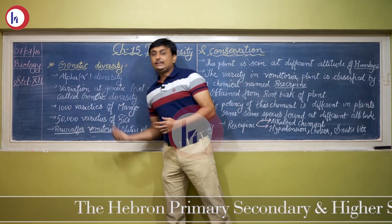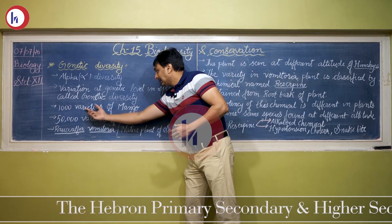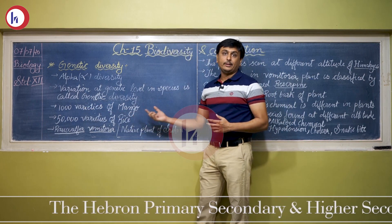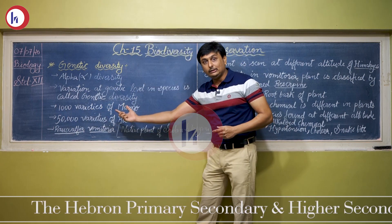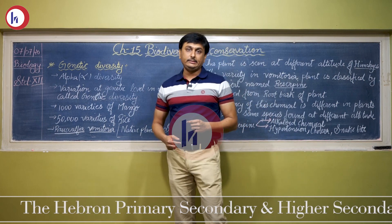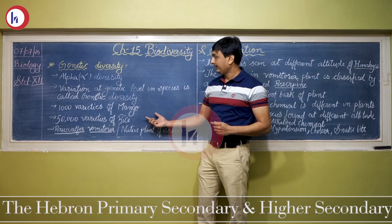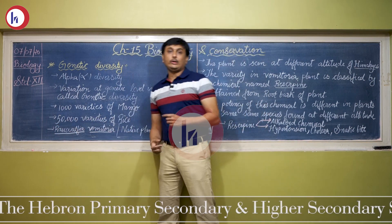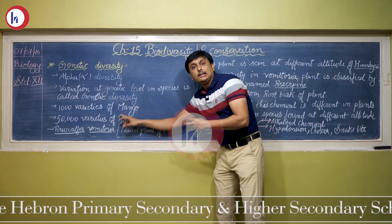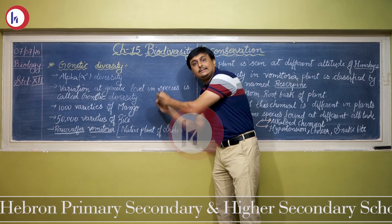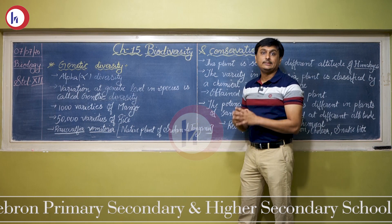Secondly, if we see in India, there are various varieties of mangoes. There are one thousand varieties of mangoes present in India — this number is important as it is documented in NCERT and is important from the perspective of examination. Also, 50,000 varieties of rice are found in India. The varieties are different but the species is the same, meaning the scientific name remains the same.